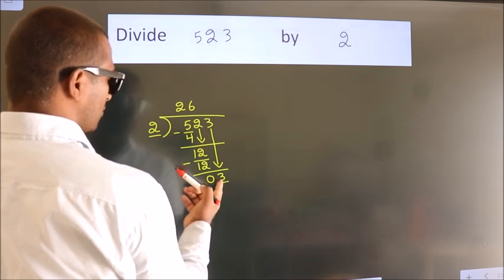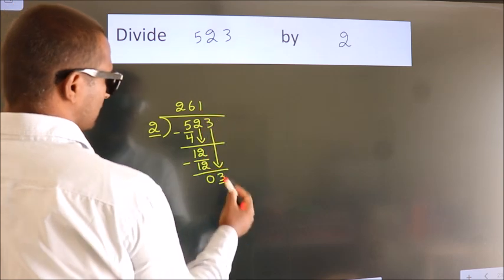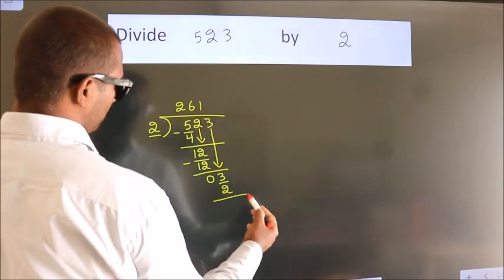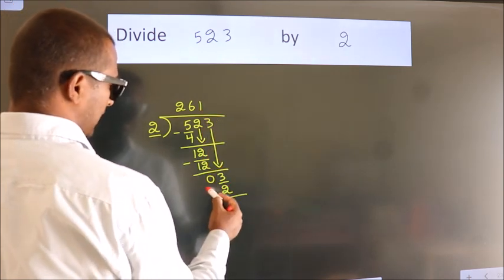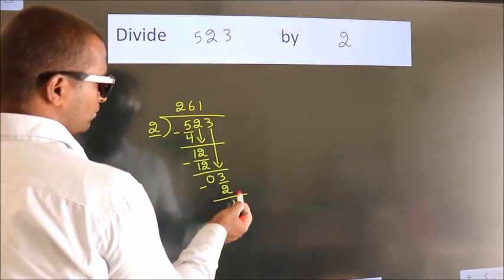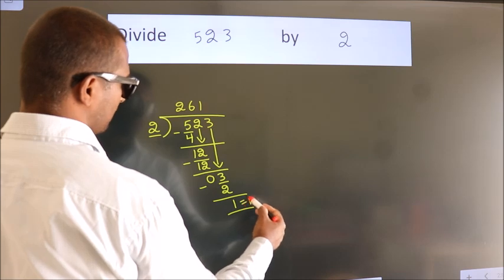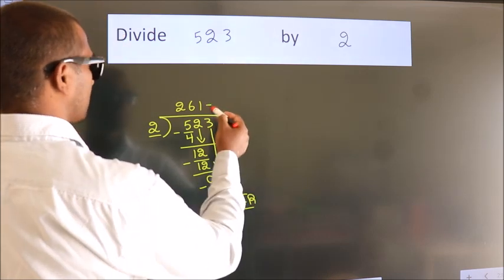A number close to 3 in 2 table is 2 1s, 2. Now, we subtract. We get 1. No more numbers to bring it down. So, we stop here. This is our remainder. This is our quotient.